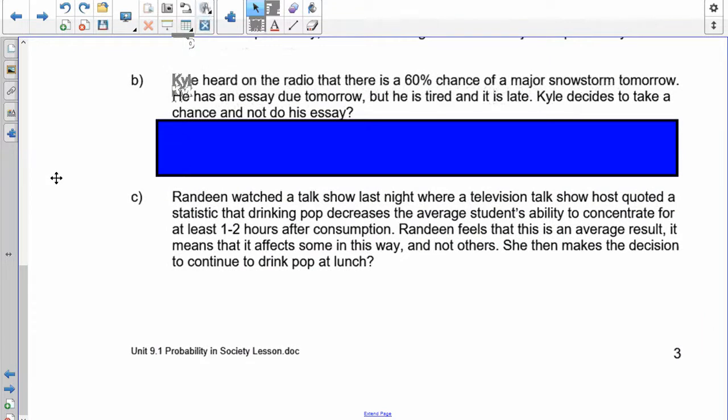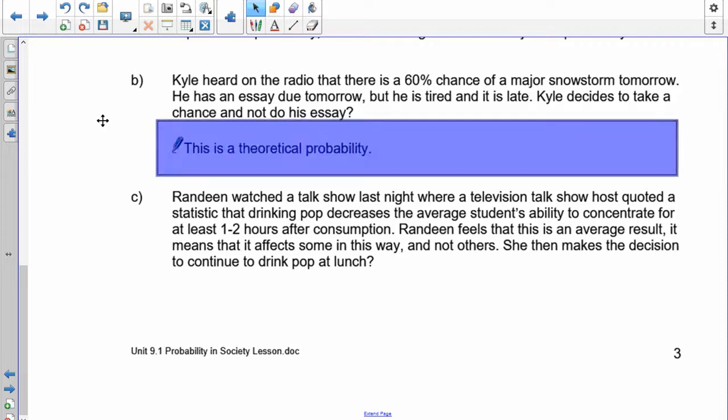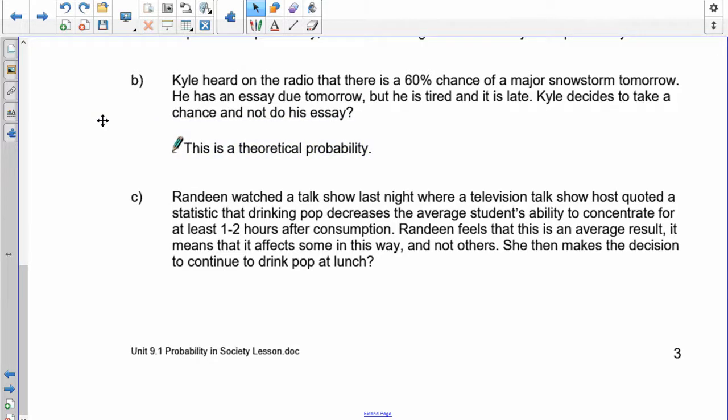Kyle heard on the radio that there's a 60% chance of a major snowstorm tomorrow. He has an essay due tomorrow, but he's tired and he's late. Kyle decides to take a chance and not do his essay. Now, whenever you see the percentage sign somewhere, 60%, that's a probability. So someone has sat down and done the calculations, theoretical, to find out what the chances are of the snowstorm tomorrow. So Kyle is basically doing a theoretical probability here. He's taking a look at the statistics, 60%. He's making a decision based on that.